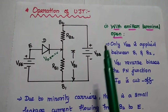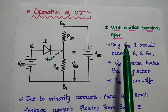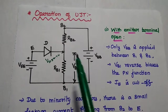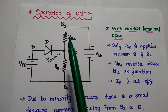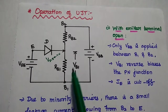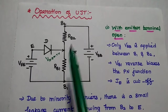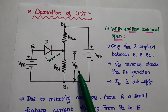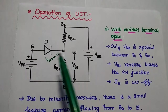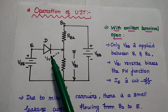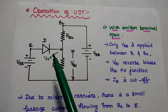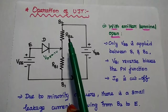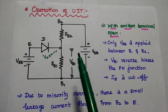Next, operation of UJT. There are three conditions. First, with emitter terminal open — no voltage applied at the emitter, only VBB is applied between B1 and B2. There is a voltage drop across RB1 and RB2. The RB1 voltage drop causes reverse bias to the diode, providing VB1, which keeps the emitter current in the cutoff region. Due to minority carriers, there may be some small current flow from B2 to emitter.